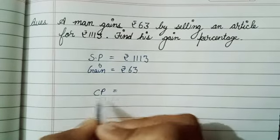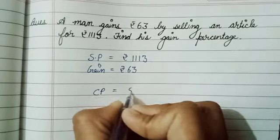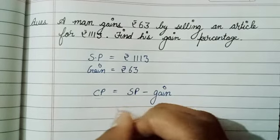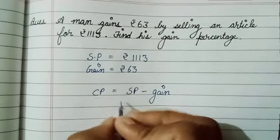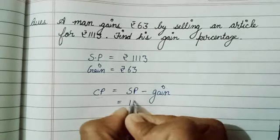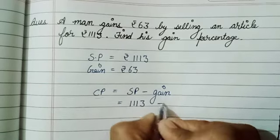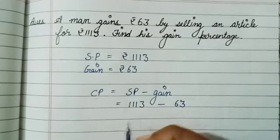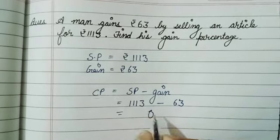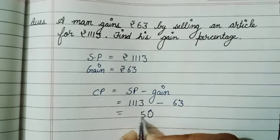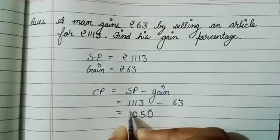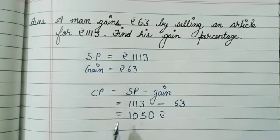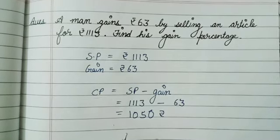First we find CP. The formula is: CP equals SP minus gain. This formula applies when SP and gain are given. So CP = 1113 minus 63, which gives us rupee 1050. This is our cost price.